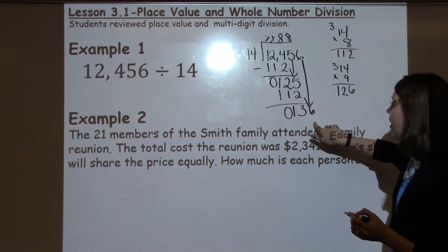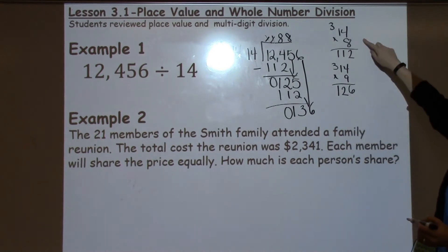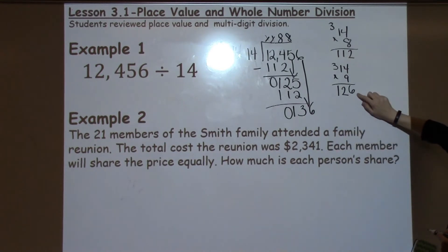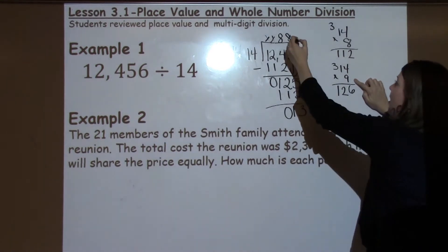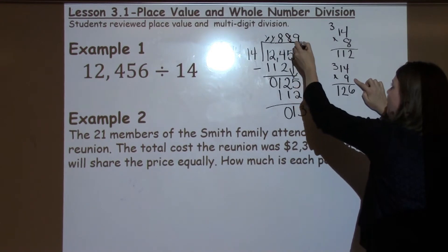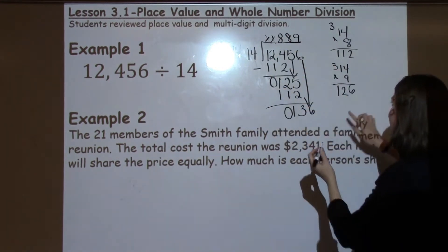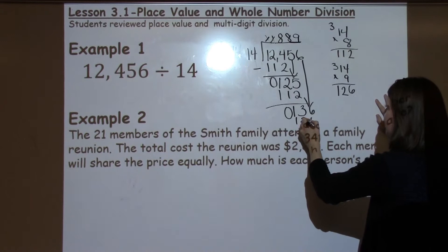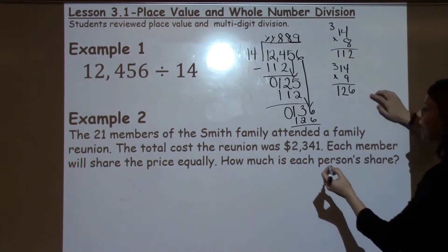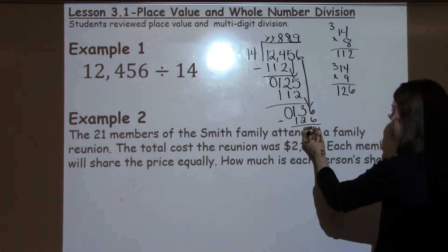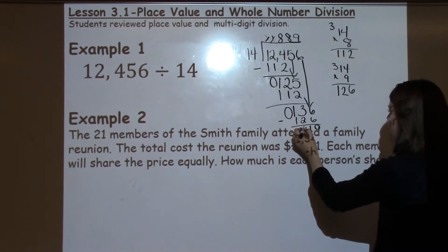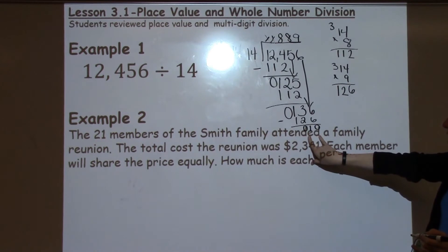I need to think, can 14 go into 136? Well, I know from these facts over here that it can go in there 9 times. I'm going to put a 9 on top of my 6. 9 times 14 is 126, which I got from my facts over here. And I'm going to go ahead and subtract. 6 minus 6 is 0. 3 minus 2 is 1. 1 minus 1 is 0. I have a remainder of 10.